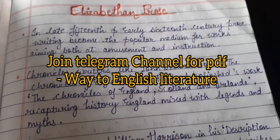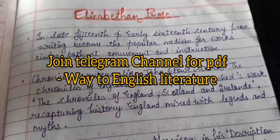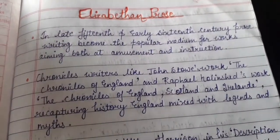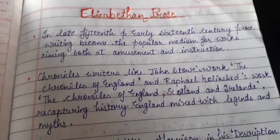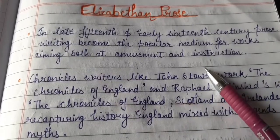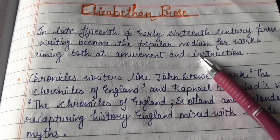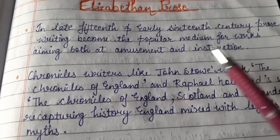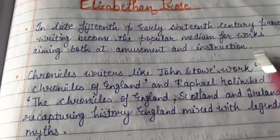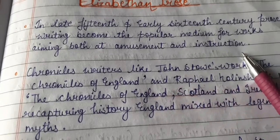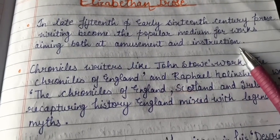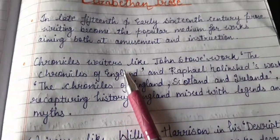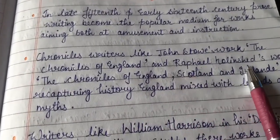Hello and welcome back to my channel. Today's video topic is Elizabethan prose. In previous videos I have already covered the Elizabethan age, so please watch them. Elizabethan prose started in the late 15th and early 16th century. It became a popular medium of writing for amusement and instruction. During this age, the writing of prose style begins from chronicle writing like John Stowe and Raphael Holinshed.